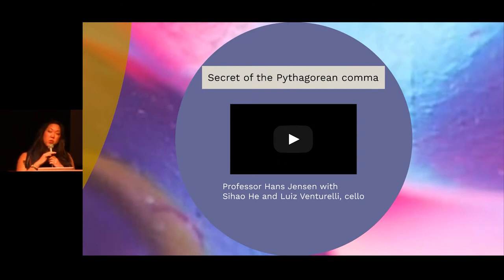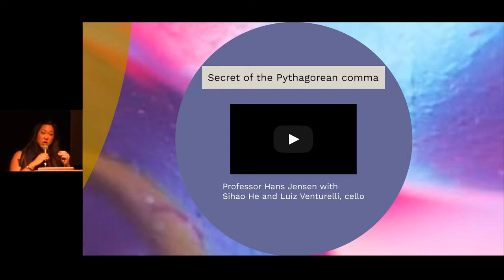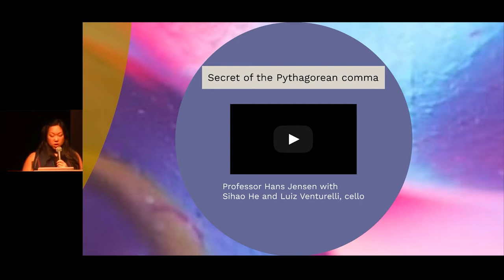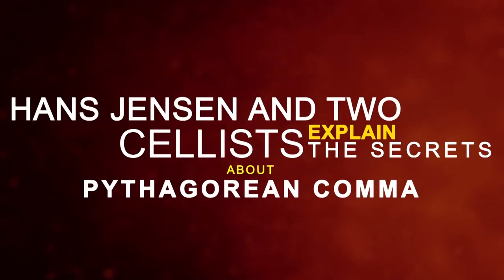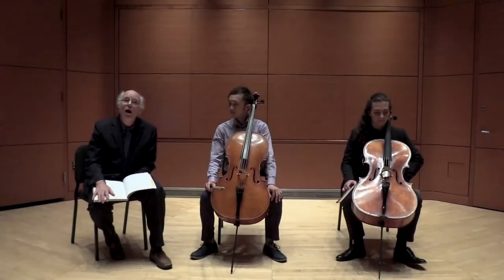Now we're going to have two cellists play together the series of 12 perfect fifths. And when they land on the final perfect fifth, you can then hear the difference between a B sharp and a C. I bring to you Hans-Jürgen Jensen, lead author of Cello Mind.